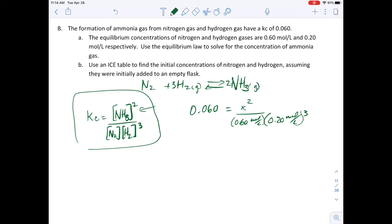So I'm going to simplify this where I get x squared equals 0.60 times 0.60 mole per liter times 0.20 mole per liter cubed. And so I'm just sort of simplifying this. I'm taking this and getting it to the other side by multiplying both sides by the denominator.